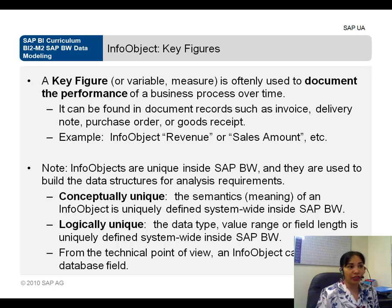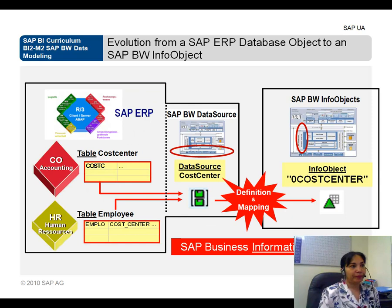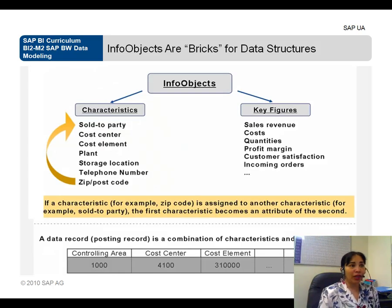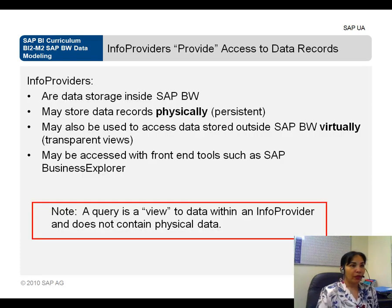To summarize: an info object is a business entity about which we store data. It has two types — characteristics, which are descriptive attributes of the object such as customer number, customer name, and customer address, and key figures, which are quantitative measures like sales, cost, quantities, and profit margin.